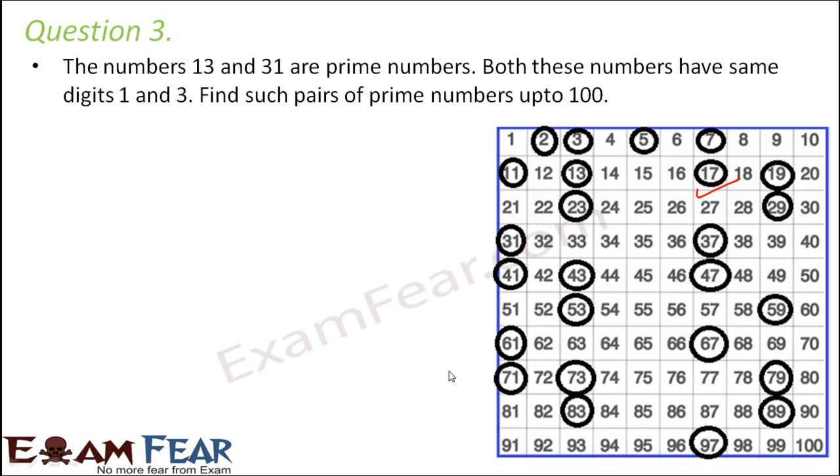So one such pair could be 17 and 71. They are also prime numbers and they are made up of the same digits 1 and 7. Now another such example. Can you look for another such example? 23 no because 32 is not a prime number. 31 we have already done. 43 it cannot be because 34 is not a prime number. 37 and 73 yes this could be another one. Is there any other that you could find? 79 and 97 so these are also made up of the same digits. So 13, 31, 17, 71, 37, 73, 79, 97. These are such pairs of prime numbers up to 100 which are made up of the same digits.